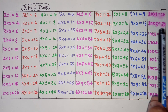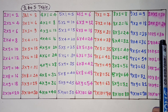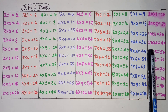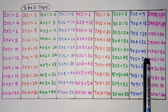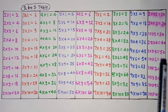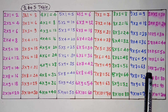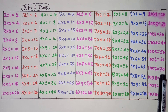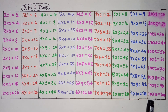10 ones are 10, 10 2's are 20, 10 3's are 30, 10 4's are 40, 10 5's are 50, 10 6's are 60, 10 7's are 70, 10 8's are 80, 10 9's are 90, 10 10's are 100.